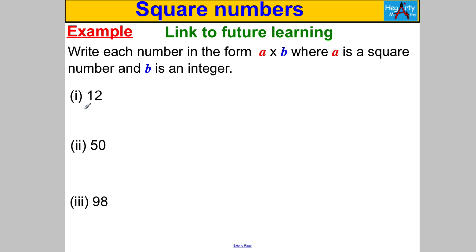Let's try another question. Write each number in the form A times B where A is a square number and B is an integer. If anyone gives you a question like this, I'd always write the squares out: 1, 4, 9, 16, 25, 36, 49, 64, 81, 100, 121, 144, 169, 196, and 225. We want to write 12 as a square multiplied by another number. We could write it as 1 multiplied by 12, or as 4 multiplied by 3. Those are our only options.